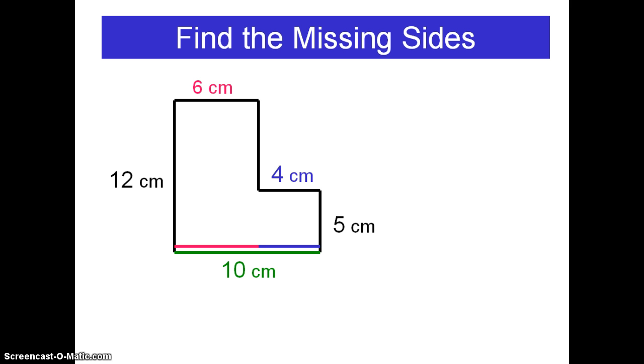The other missing side in my polygon is a vertical measurement. I am going to look at all my vertical measurements in this irregular polygon. Once again, I will slide the blue and the pink segments to align them beside the green segment.